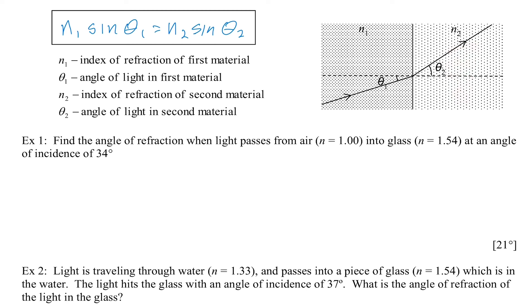If it were going from a more optically dense to a less optically dense material, it would basically just be the reverse of this, and it would be going from a bigger angle to a smaller angle. So let's look at some examples of this.